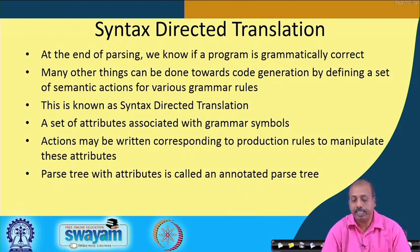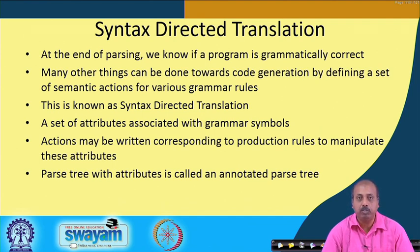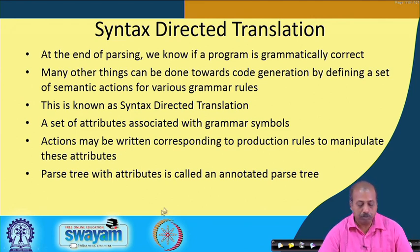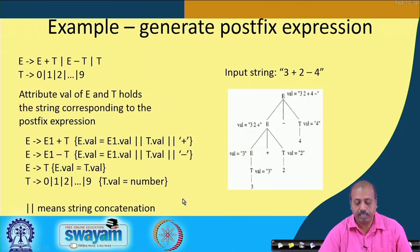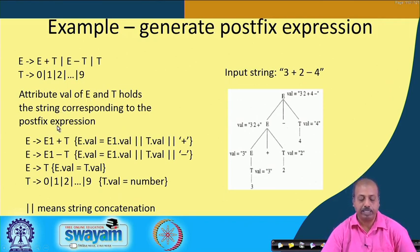Next we will look into syntax directed translation. At the end of the parsing process we know if a program is grammatically correct, and many things can be done towards code generation by defining semantic actions for grammar rules — this is called syntax directed translation, where translation is guided by the syntax. We can associate attributes with grammar symbols and write actions in terms of those attributes. A parse tree with these attributes set is called an annotated parse tree.